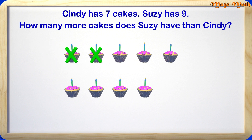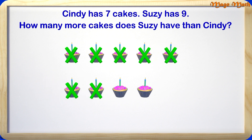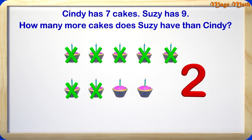1, 2, 3, 4, 5, 6, 7. We have crossed out 7 cakes. How many are left? 2 cakes! Great job guys! Susie has 2 more cakes than Cindy does.